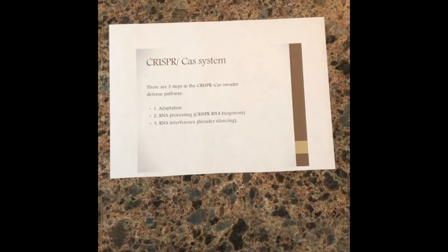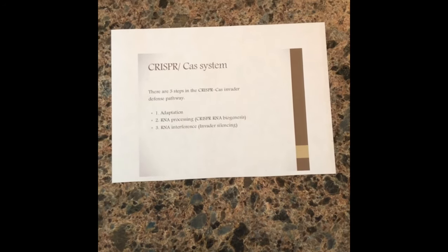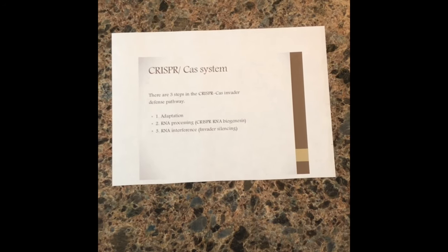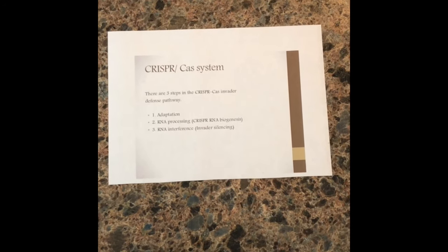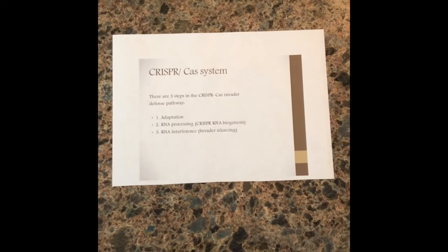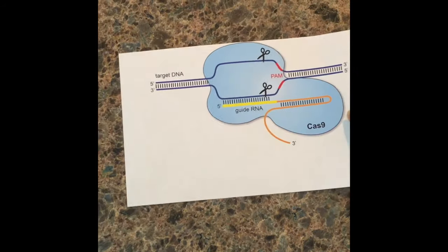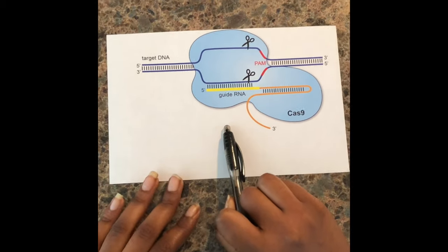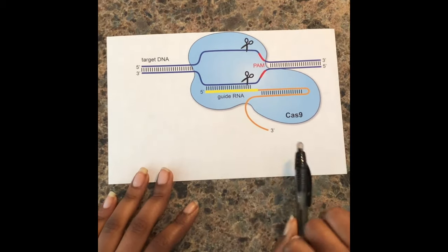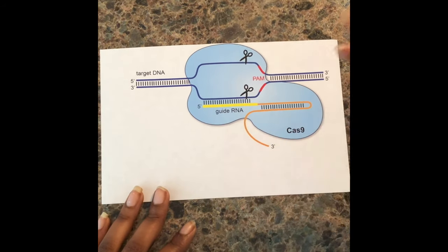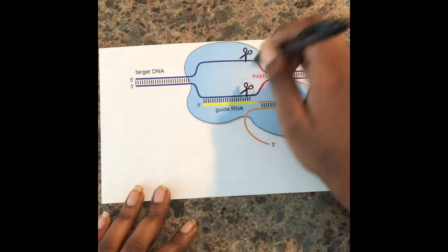Here the system uses guide RNA to cut a specific unwanted sequence, and it pairs with the DNA we want to cut out. Another DNA sequence must be added that carries the appropriate sequence we wish to implant. Here in this example we have our target DNA. We also have our guide RNA which guides the Cas9 system to pair with it and cut out the unwanted sequences that you see.